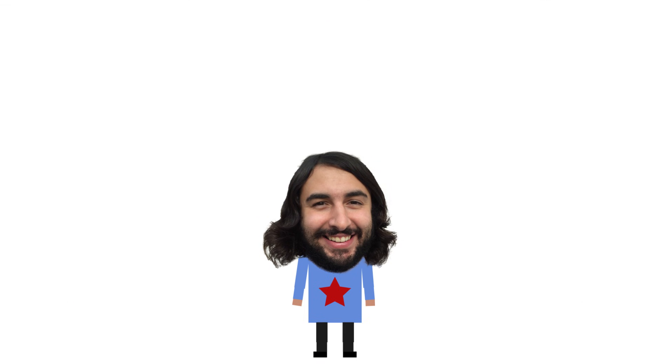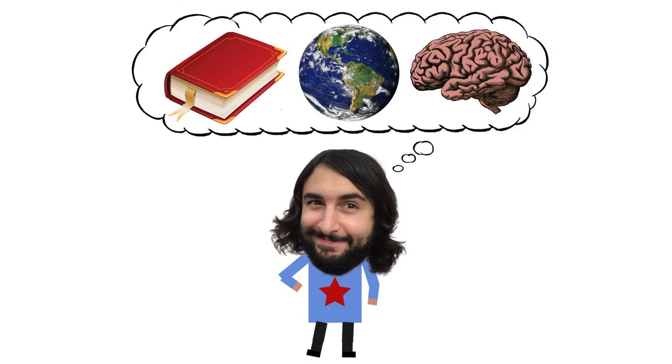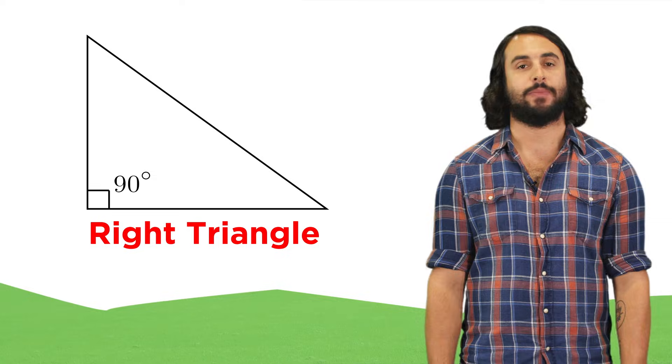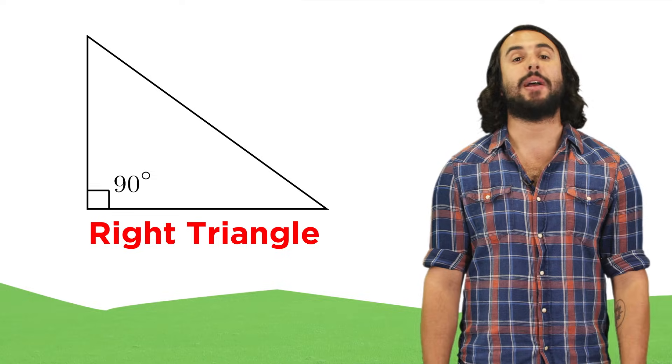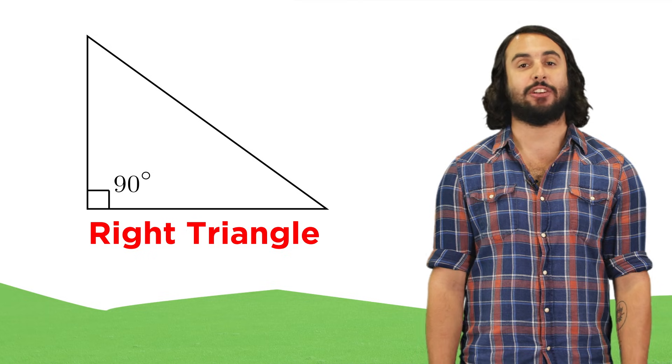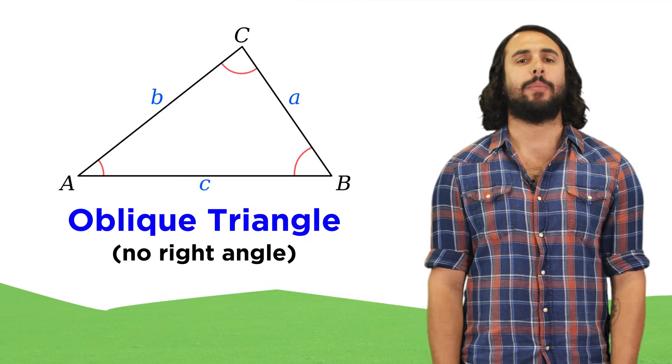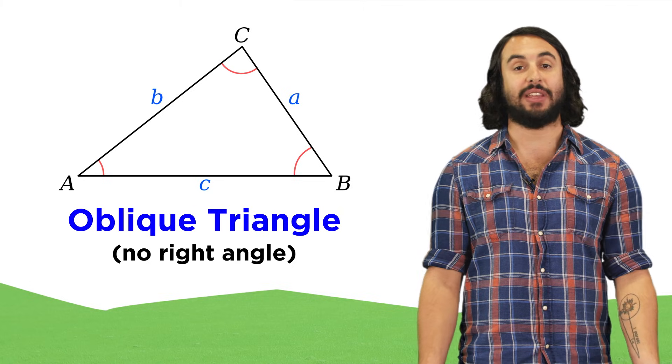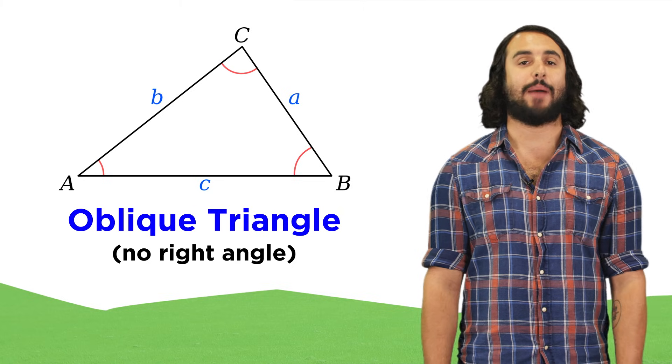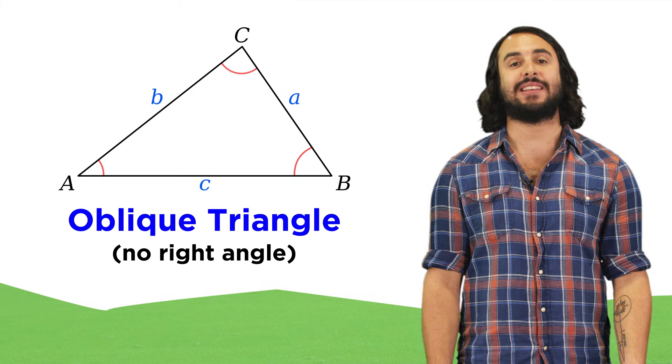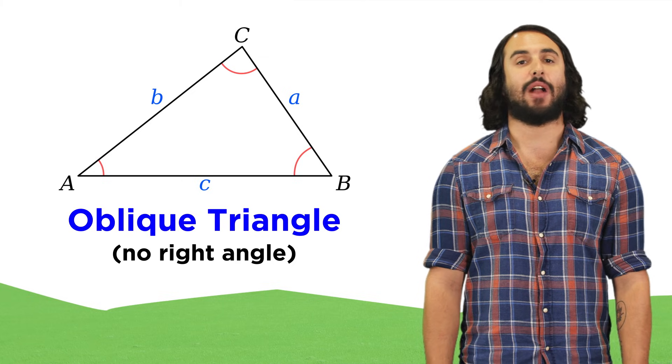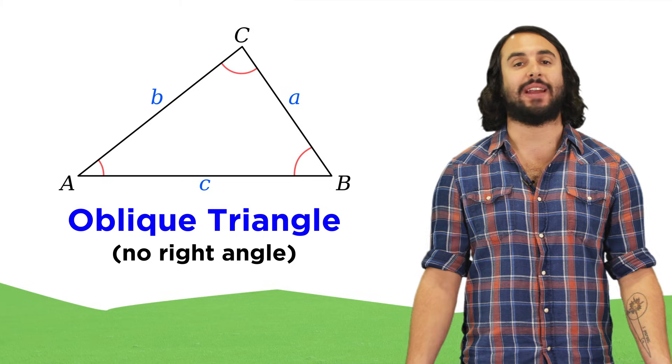It's Professor Dave, let's learn the law of sines. We have learned a lot about trigonometric functions as they pertain to right triangles, but what about other types of triangles? Surely we can do something with these as well. As it happens, there is a law that will help us find the sides and angles of oblique triangles as well. Oblique triangles are ones that don't have a right angle.